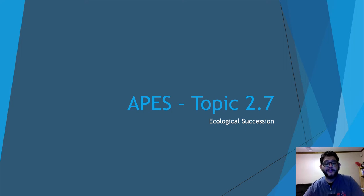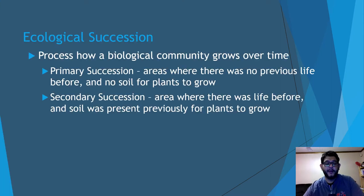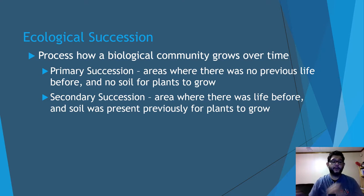Hey guys, this is Mr. V and this is APES topic 2.7 of the review videos — the last one of unit 2 on ecological succession. One of the things I want you to learn about ecological succession is that it's how a biological community changes over time. This happens over long periods of time, and we have two types to look at.